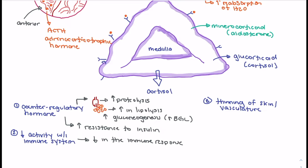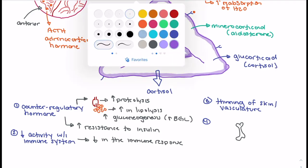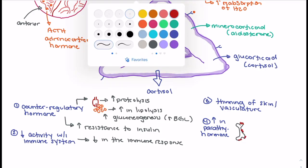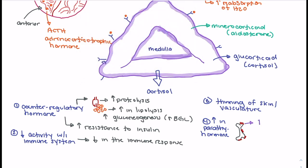Finally, an increase in cortisol also leads to increased release of parathyroid hormone and osteoclast activity. Parathyroid hormone is typically released when calcium levels are lower. Increased parathyroid hormone increases osteoclast activity, which breaks down bones and increases the amount of calcium being released. So we see promotion of bone destruction leading to the release of calcium.